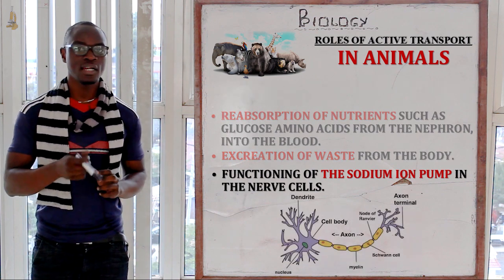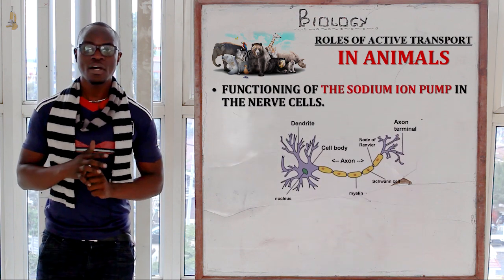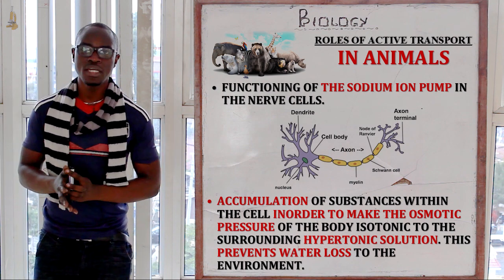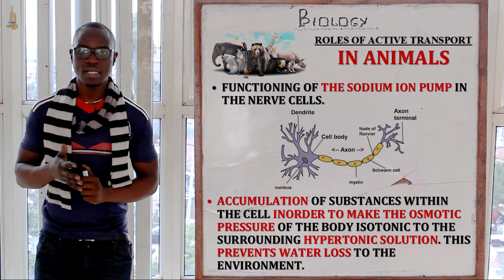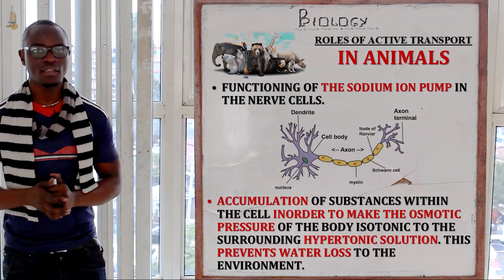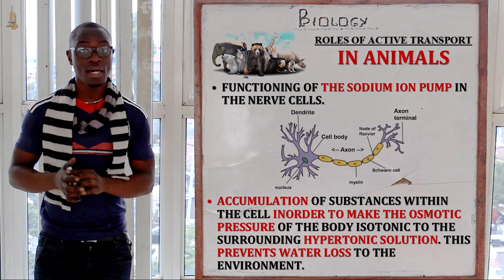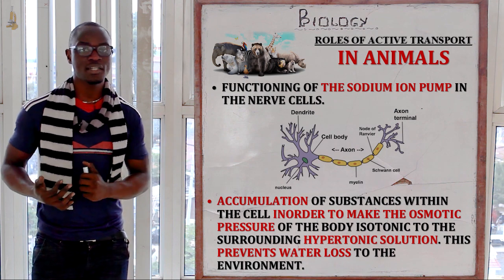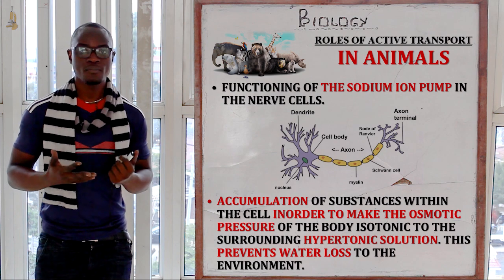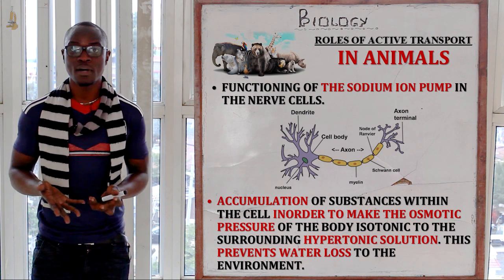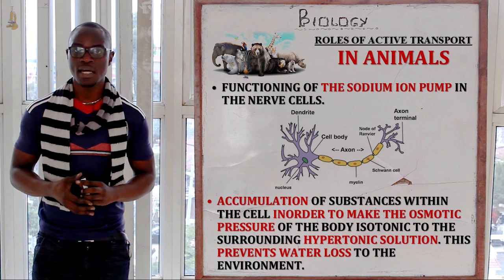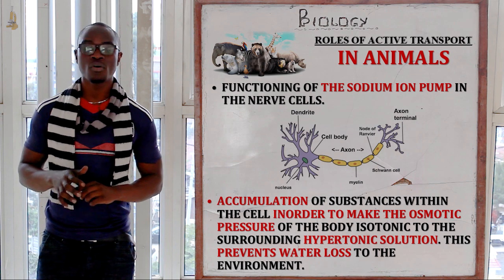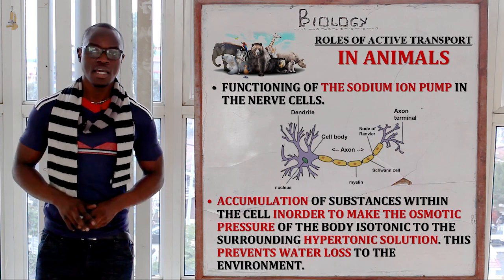We also have the functioning of the sodium ion pump mechanism in the nerve cell — we will look at this in the reception, response and coordination topic. Lastly, we have the accumulation of substances in the body to offset osmotic imbalance, mainly in arid and saline area organisms. In these organisms, high salinity or excessive heat may dehydrate the organism, so active transport plays a major role in maintaining osmotic balance.